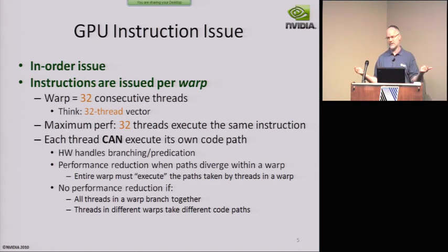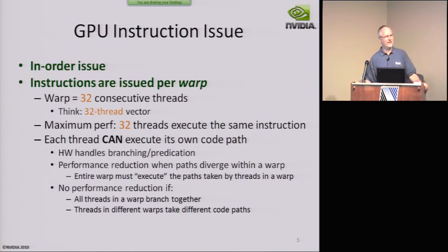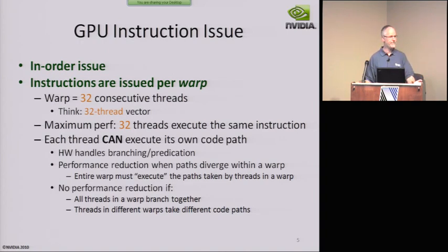Threads in different warps can take different code paths with no performance degradation. A question: if you have a bunch of conditions causing threads within a warp to diverge, does a sync threads bring them all back into lockstep? Does that re-merge them?